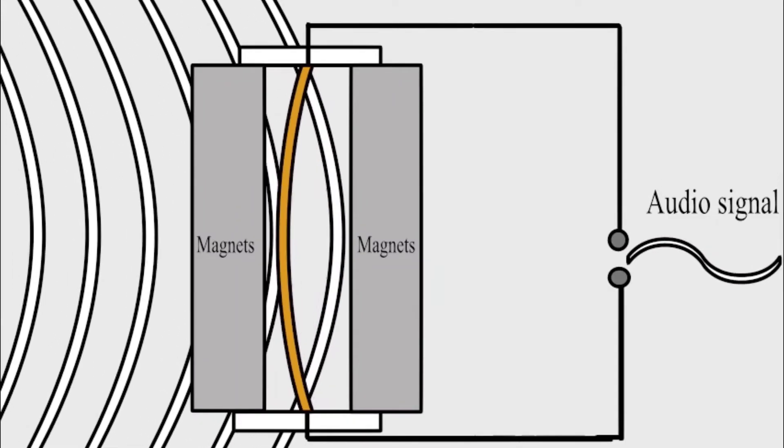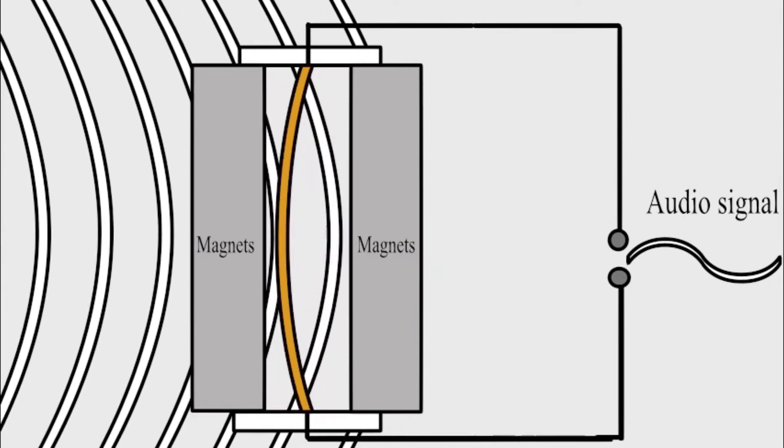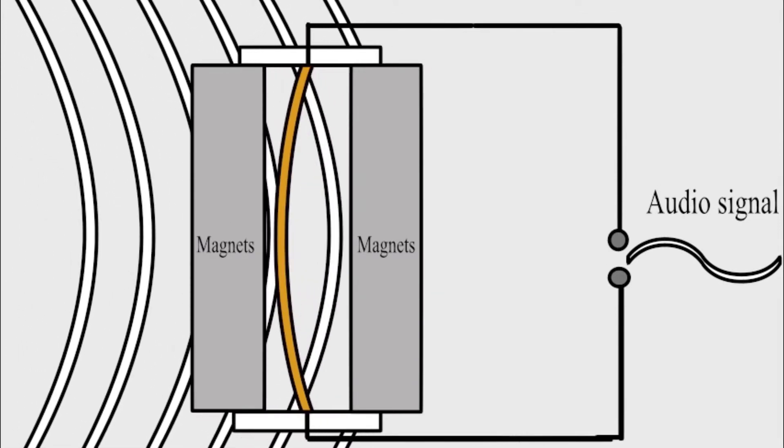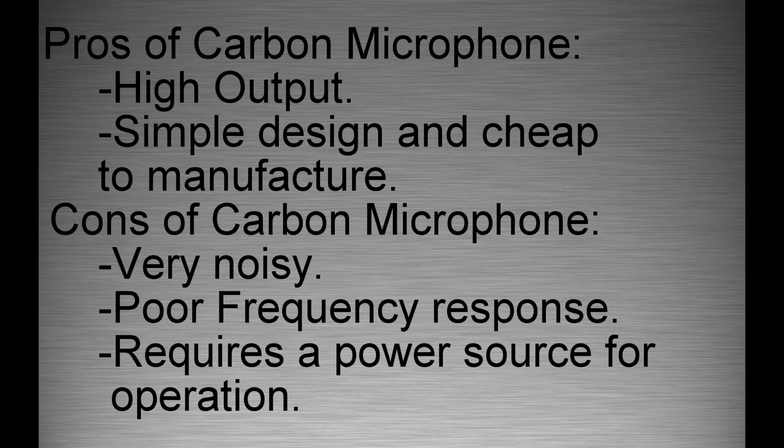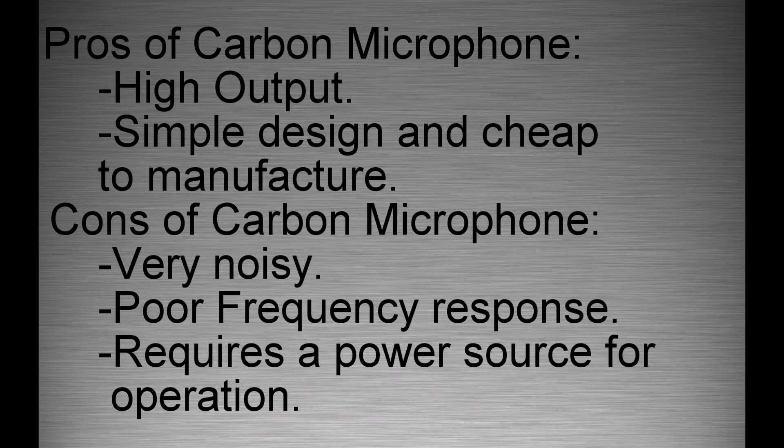When sound wave hits the metal plate, it begins to move back and forth between the two magnets, and it induces a voltage across the ribbon or the metal plate, and that is received as the audio signal at the output. So, these are the pros and cons of the types of microphone we talked about so far.